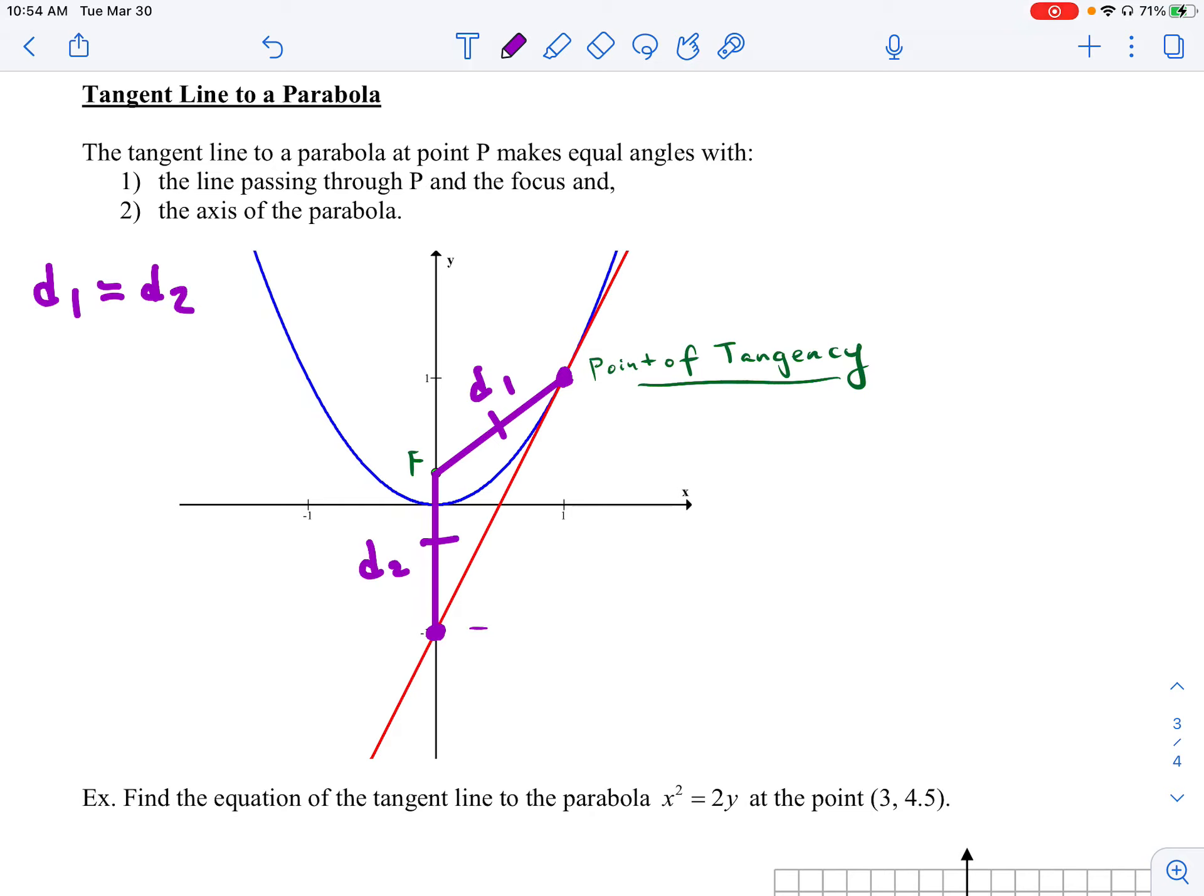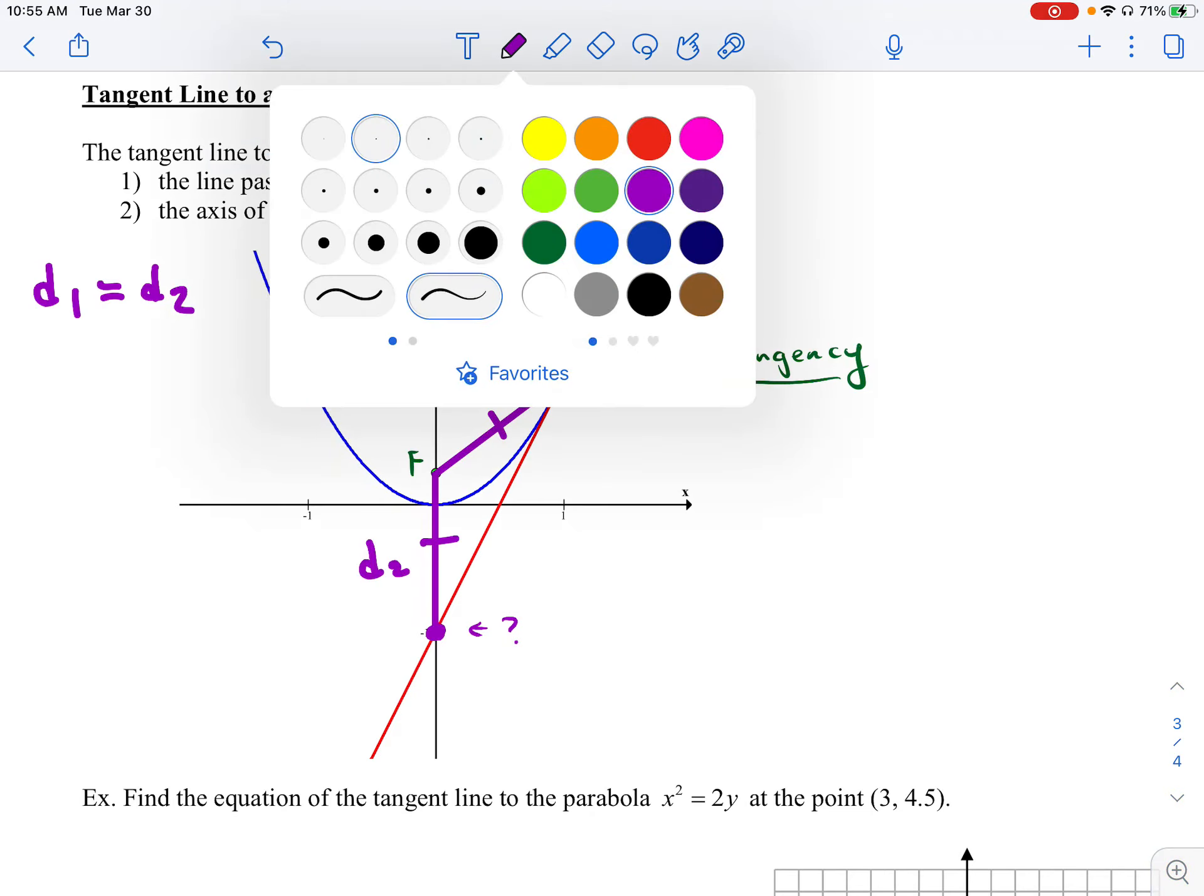The key in this problem is to figure out what this point is, because we're likely going to be given our point of tangency, and hopefully we're able to figure out where our focus is. But if we can figure out where that tangent line crosses our axis of symmetry, then we have the two points necessary to write the equation for the tangent line. So let's try this with a problem.